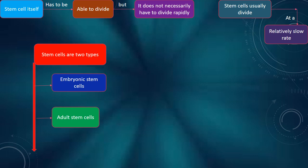The stem cell itself has to be able to divide, but it does not necessarily have to divide rapidly. Stem cells usually divide at a relatively slow rate.